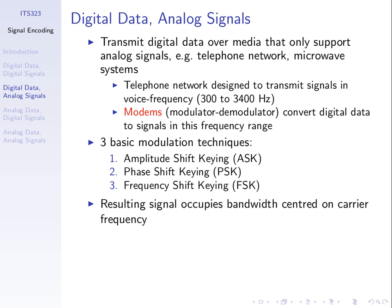At the sending point we have a modulator, and at the receiver a demodulator. Together, because at one point we both want to send and receive, we get a modem — a modulator and demodulator. A modem converts our digital data to signals within some frequency range.